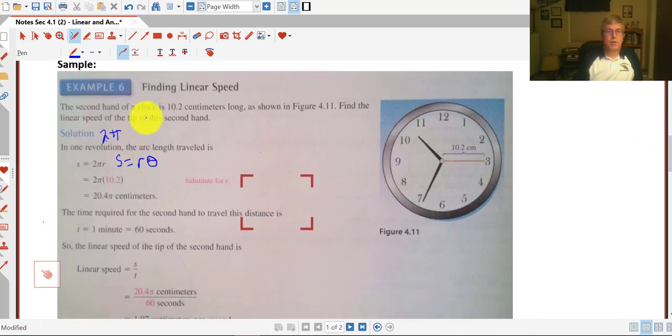So taking a sample from the book, we're going to calculate the linear speed. The second hand of a clock is 10.2 centimeters long. You see that over here in our diagram. Find the linear speed of the tip of this second hand.